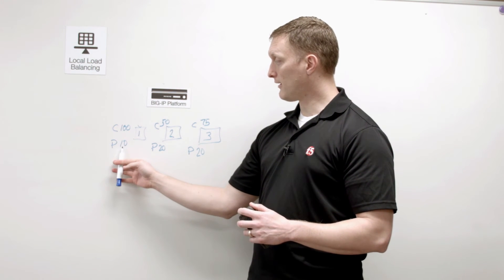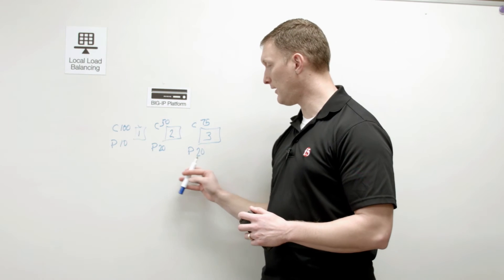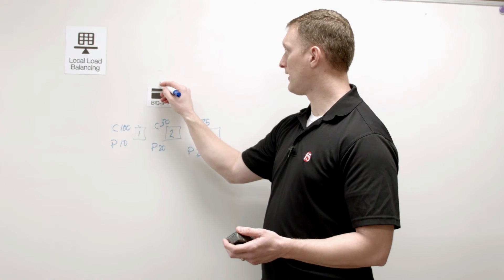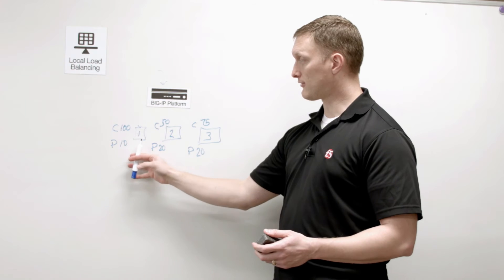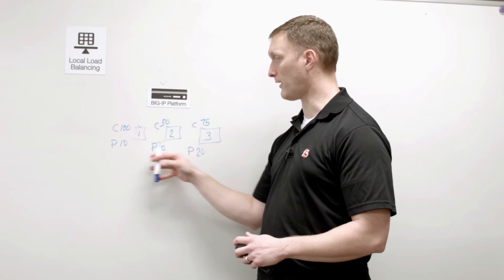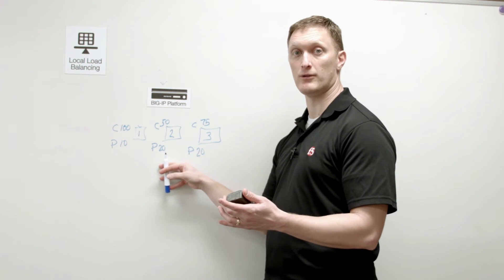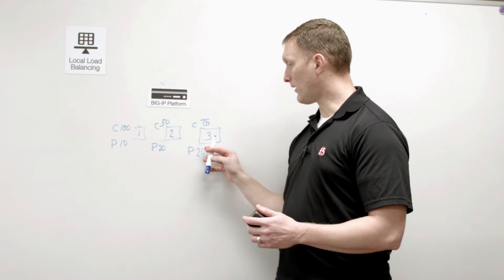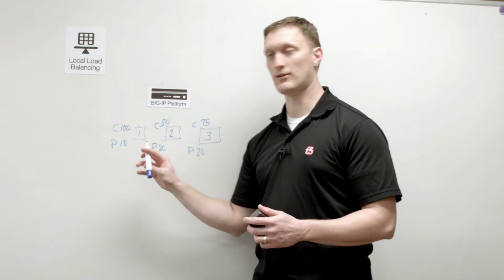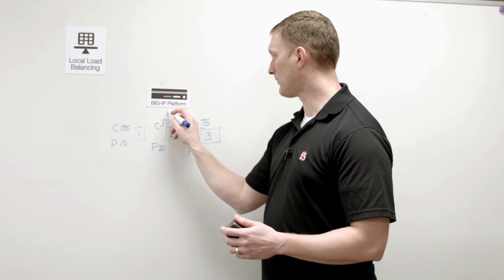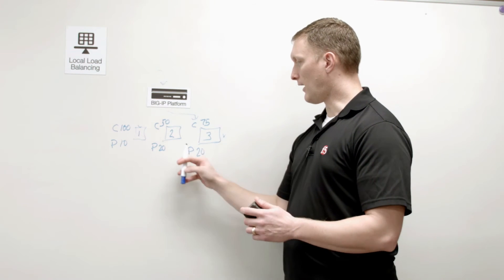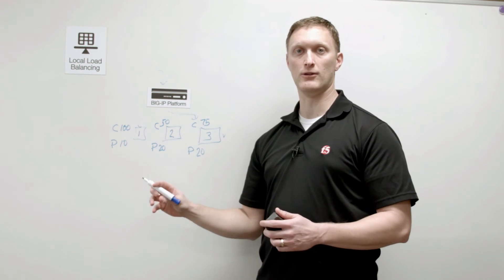In this case, server one has 10 persisted records, server two has 20, and server three also has 20. The question is where the next connection will go. Servers one and two are balanced exactly as needed — server two has twice as many as server one, matching the 1:2 ratio. But server three has a ratio of 3 and only 20 records, so it needs 10 more before it balances out. The next connection will go to server three, and this continues until it reaches 30 persisted records.